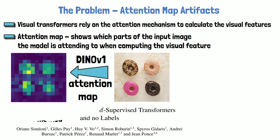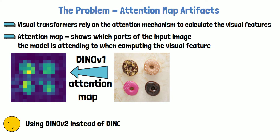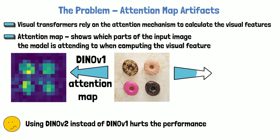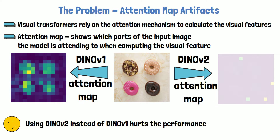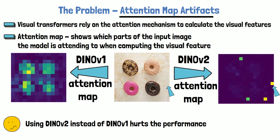An intuitive improvement was to use DINOv2 instead of DINOv1, but when researchers tried that, they noticed that instead of an improvement, DINOv2 actually delivers disappointing performance. When investigating the reason, they found that the attention map in DINOv2 is not as semantically clear as in DINOv1. Instead, there are outlier peaks in DINOv2 attention maps that appear in positions that are part of the background of the original image. These are called attention map artifacts.